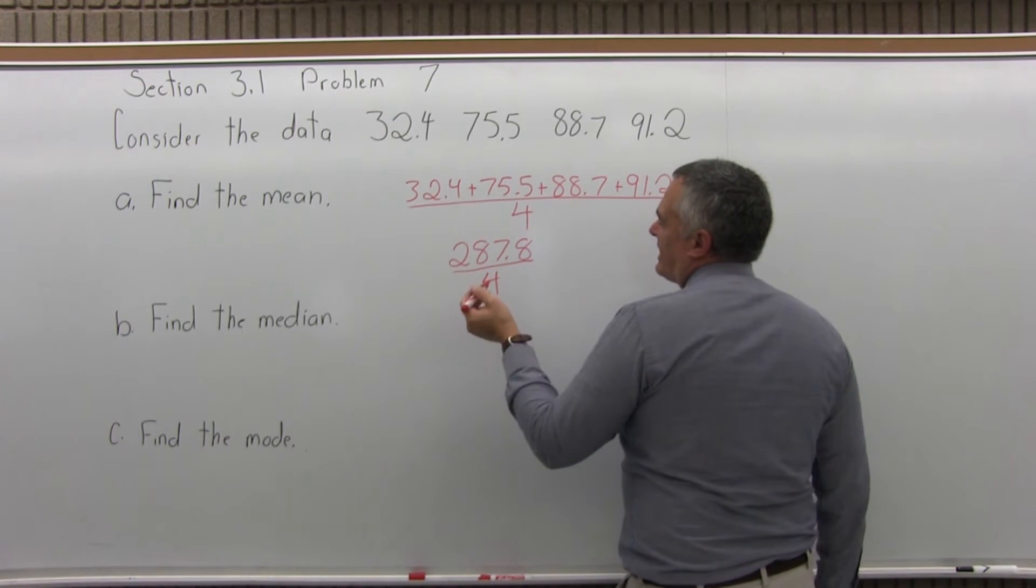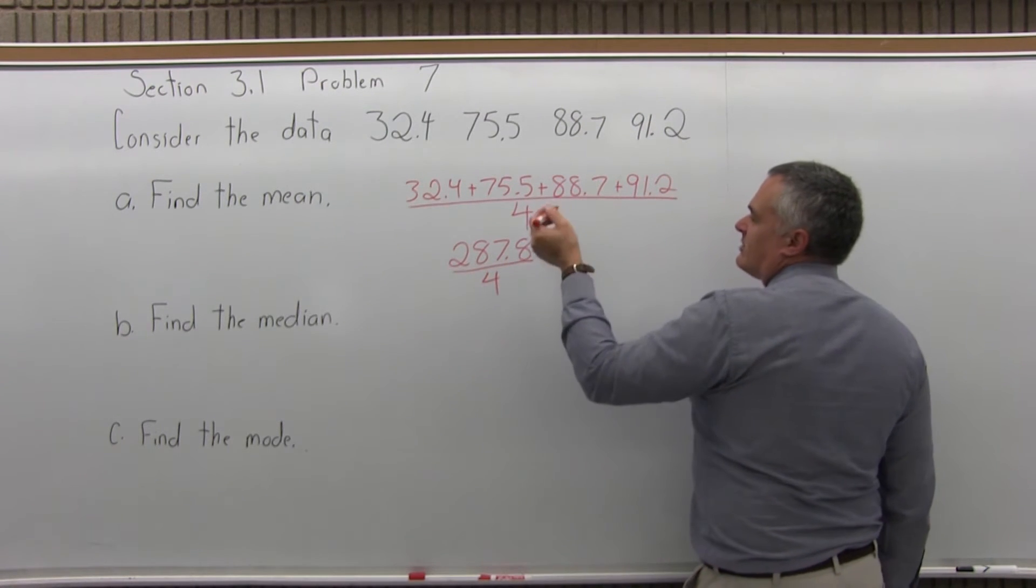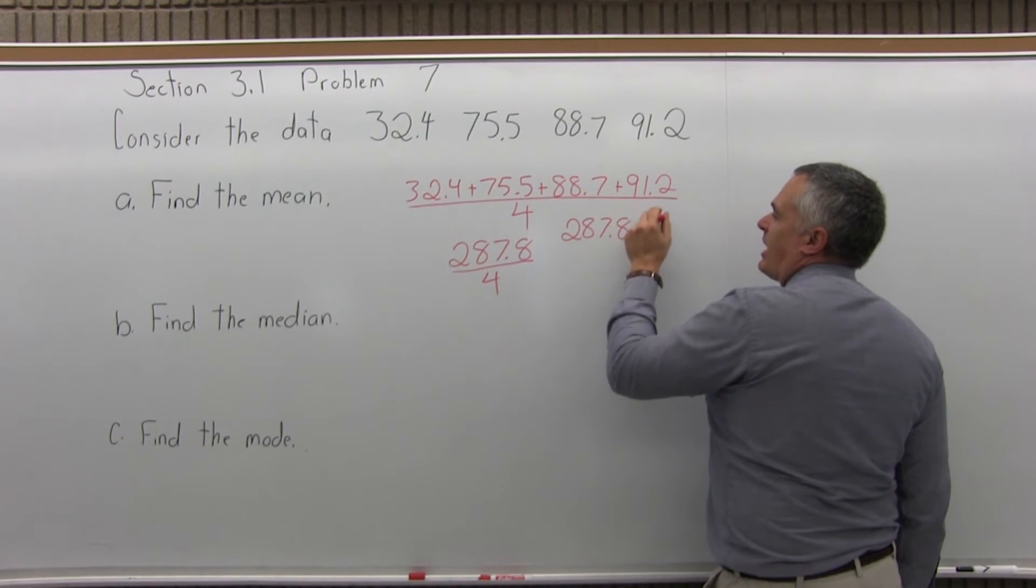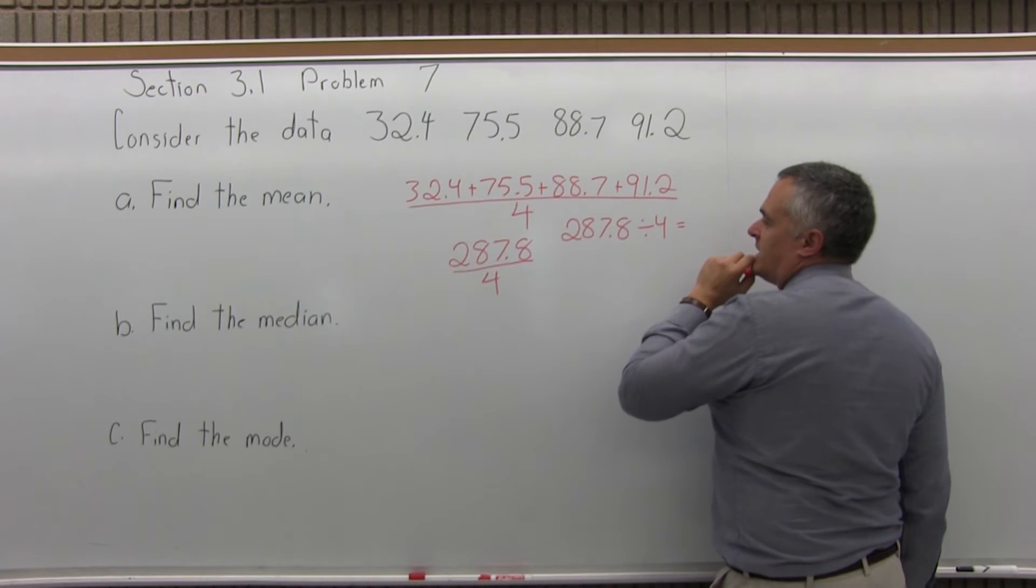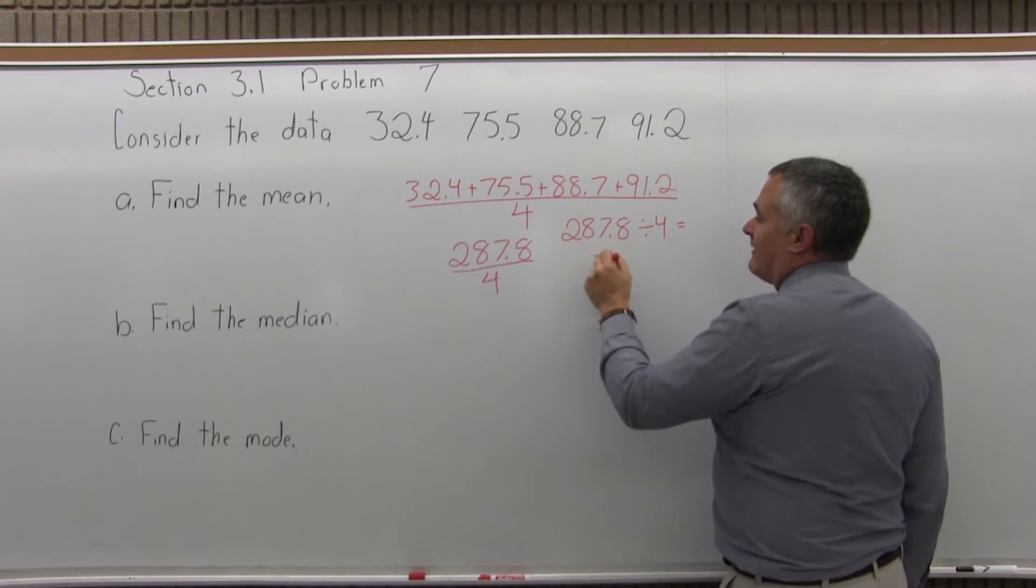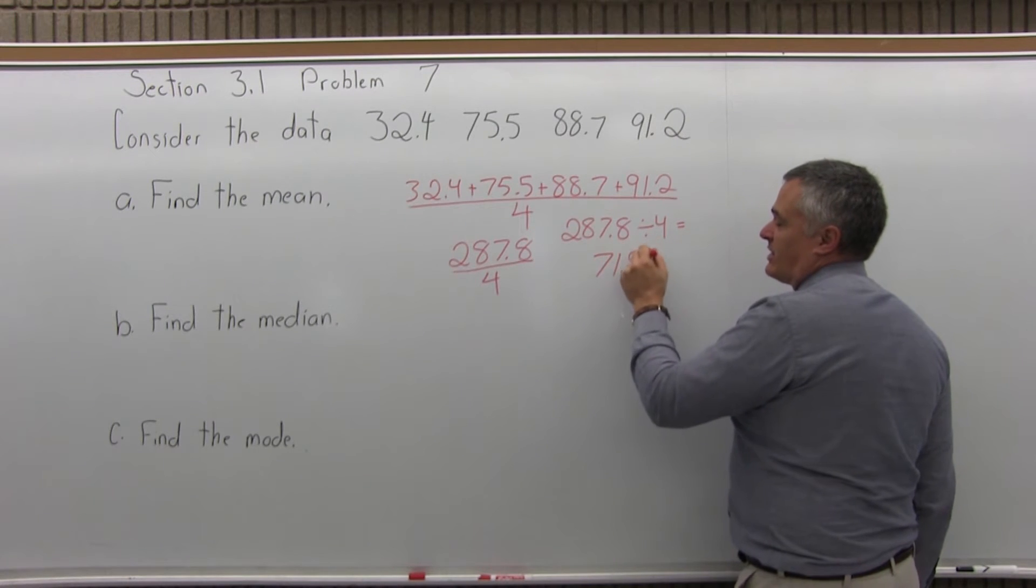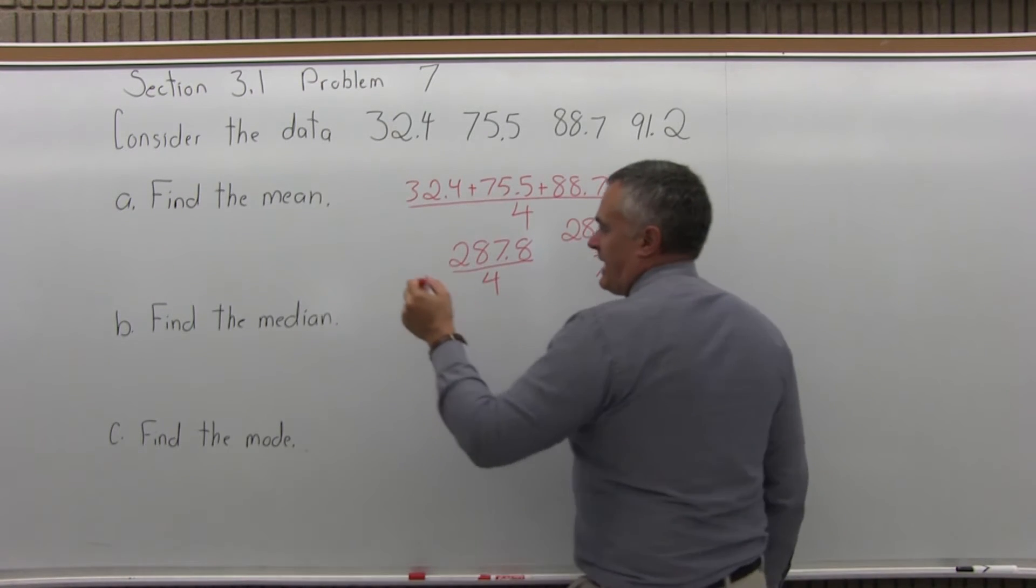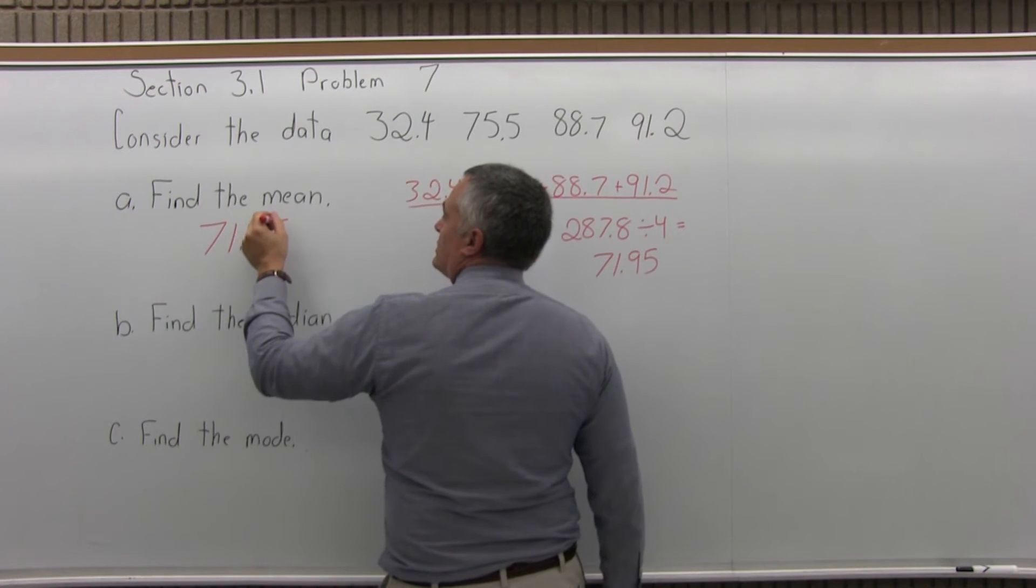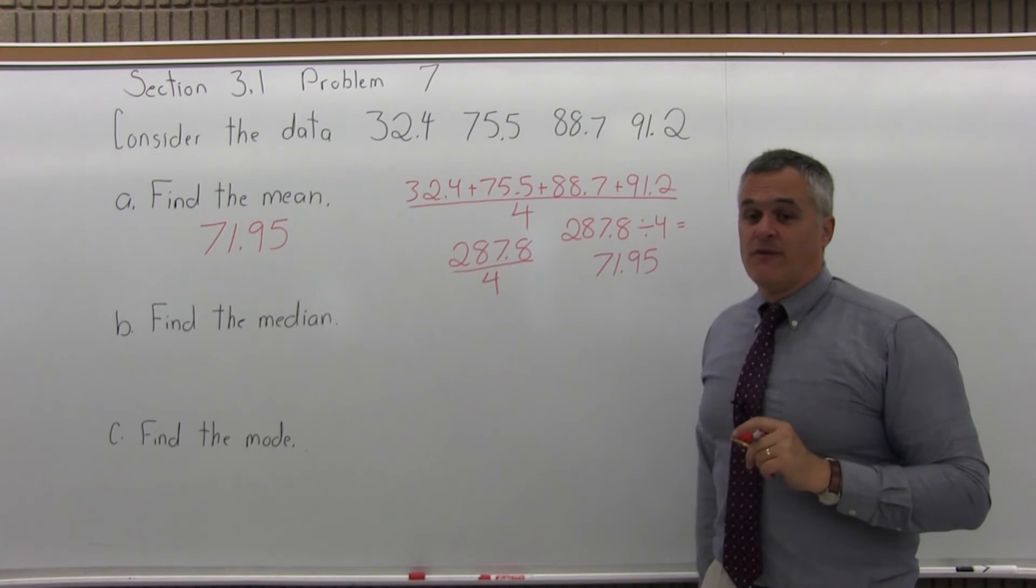Divide it by 4. Not something you would do easily without a calculator, so I would just do 287.8 divide by 4 equals, and you'll see that the answer is 71.95. I'm not doing that in my head that quickly. I tried it before the problem started. So, the mean is 71.95.